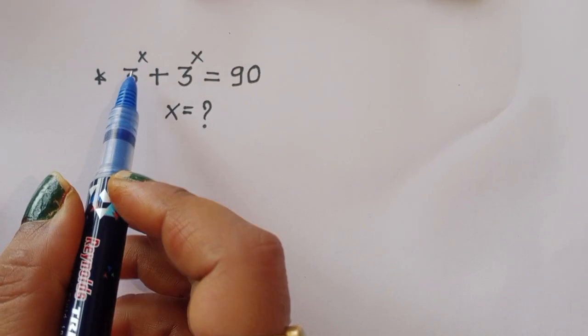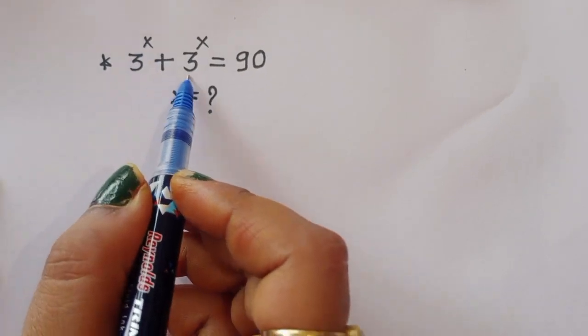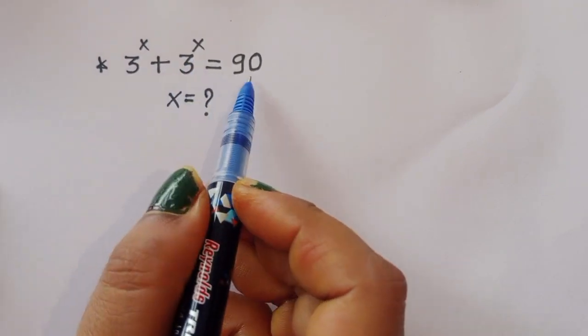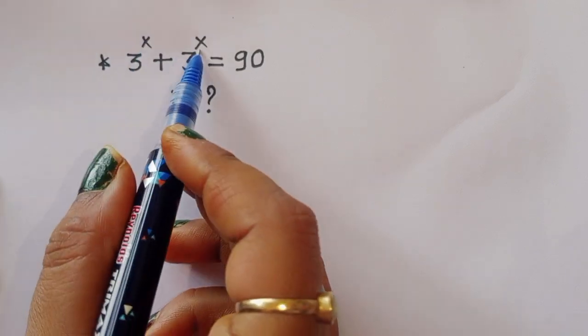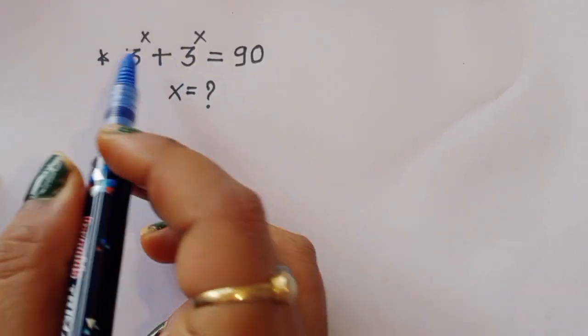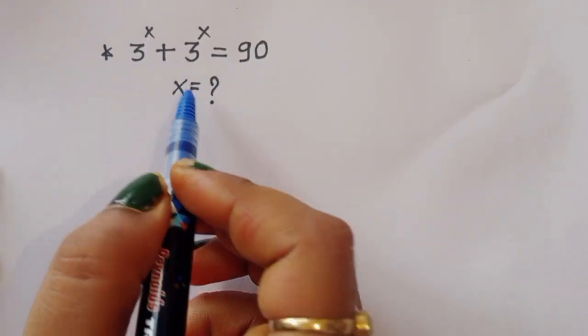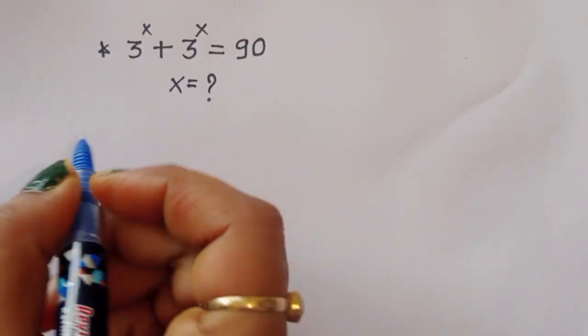The question is: given 3 power x plus 3 power x is equal to 90, we have to find out the value of x. How can we find the value of x? Let's see the solution.